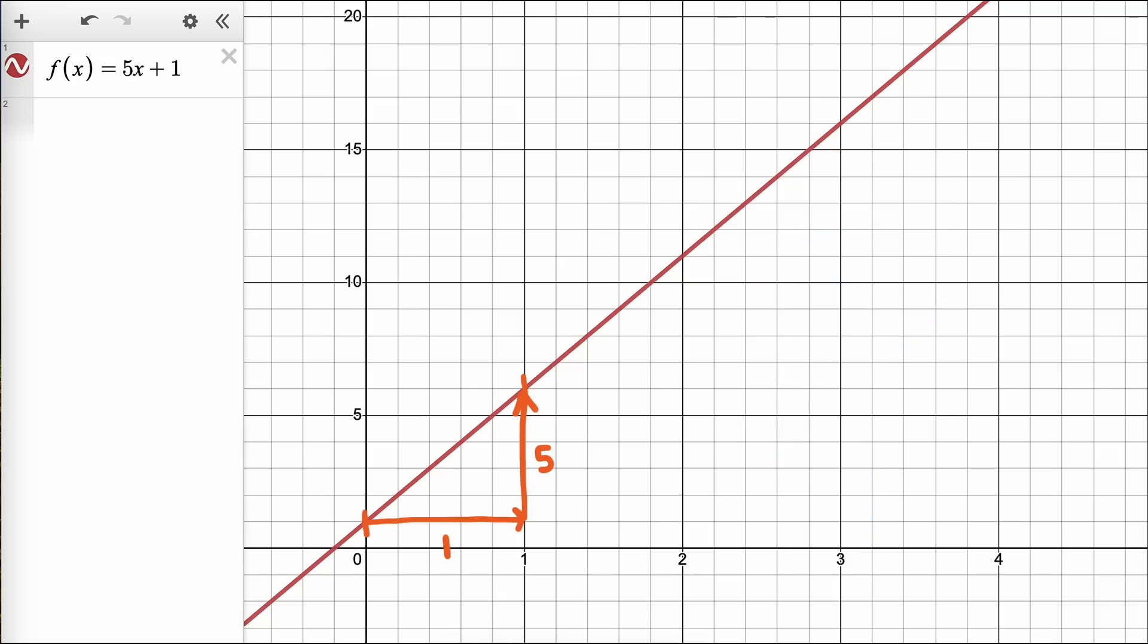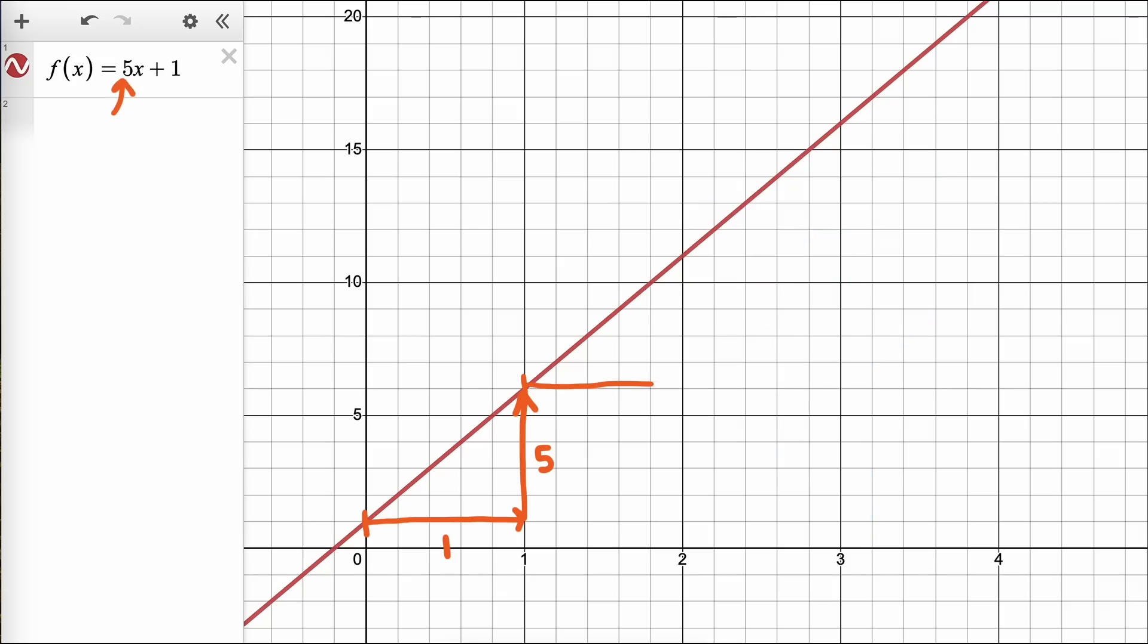How do I know it's 5? Because the slope tells me how much the y value changes with a one unit change in x, and we moved over one unit in the x direction.